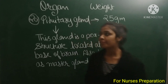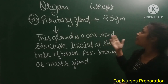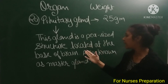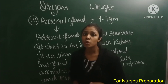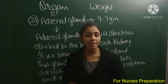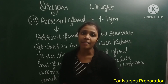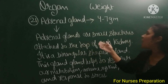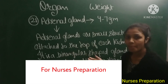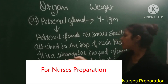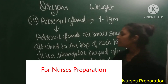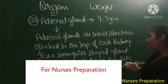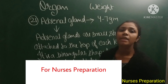Next organ is the pituitary gland, which consists of 25 grams in weight. It is a pea-sized structure located at the base of the brain. The last gland in this video is the adrenal gland, which consists of 4 to 7 grams in weight. The adrenal gland is a small, triangular-shaped structure attached to the top of the kidney. It helps to regulate metabolism, immune system, blood pressure, and response to stress.